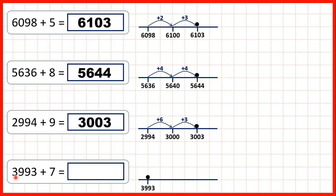And now, 3,993 plus 7. That gives us 4,000, because 3 plus 7 is 10, but in our number we already have 9 tens and 9 hundreds, so the thousands digit needs to change as well.